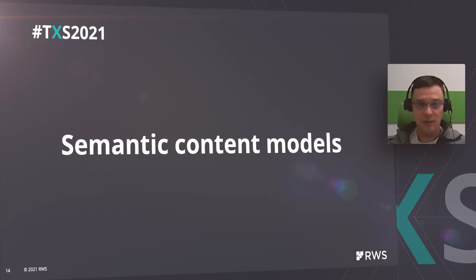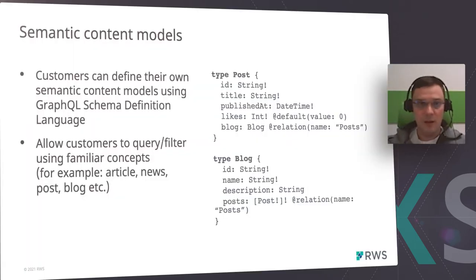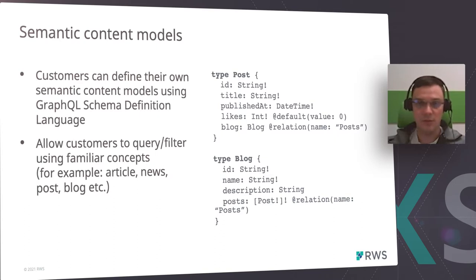We've covered content modeling on the Content Manager side. Let's talk about how you can define your semantic content models on Dynamic Experience Delivery. People familiar with DXA know that content models are defined in the application. With the new data publishing, we can do it in a more elegant way — customers can define their own semantic content models using GraphQL Schema Definition Language. They can define various types of models using familiar concepts like article, news, blog, and others. The main benefit is that instead of querying a specific item, you can query your defined data type — for example, query all articles for a specific page without needing to know what actual components were published.